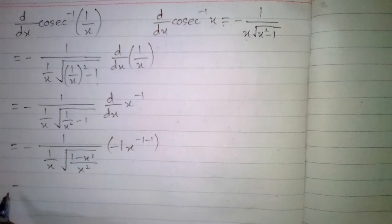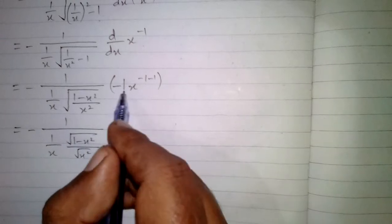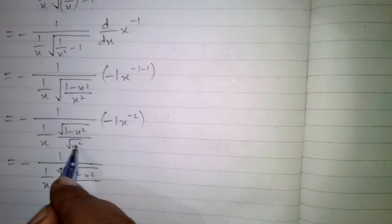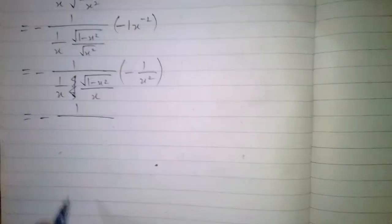Then we have −1 divided by (1/x), and since the square root is applied to the fraction, we can write the square root of the numerator divided by the square root of the denominator — that is, √(1 − x²) divided by √(x²). The square root of x² is x, and the derivative term gives us −1/x².